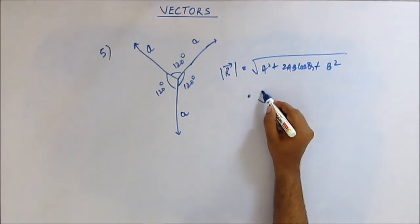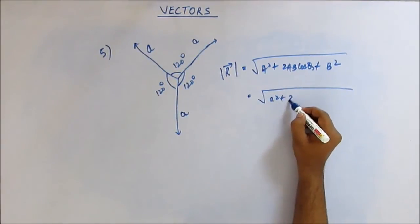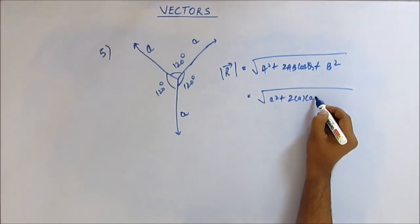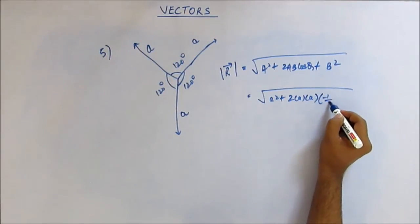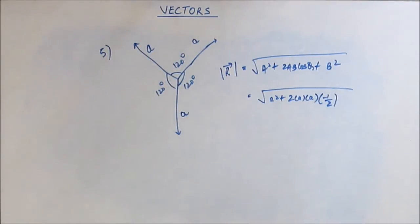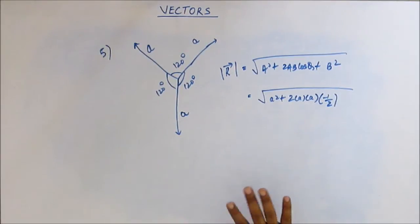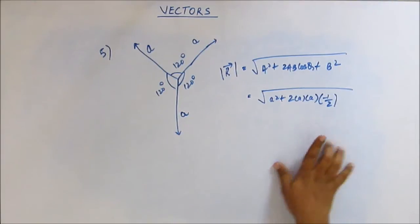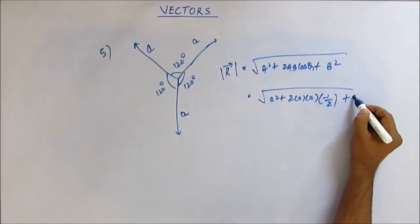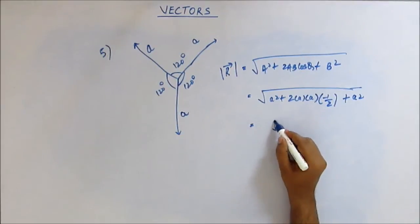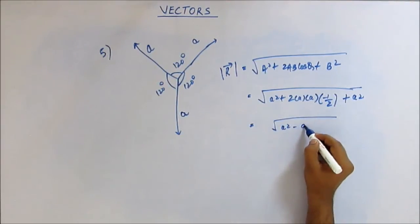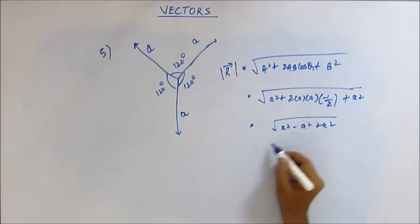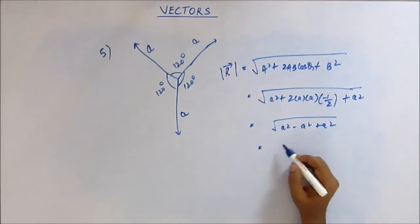You should know — and in trigonometry you must have studied angles greater than 90 degrees — that cos120° = −½. So the expression becomes √(a² − a² + a²), which equals a. So the magnitude of the resultant of these two vectors is a.